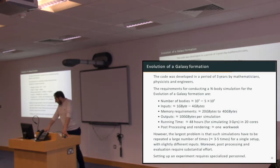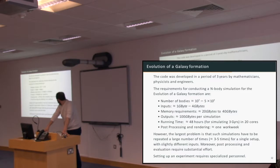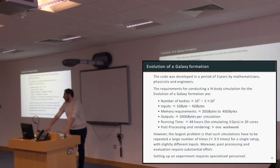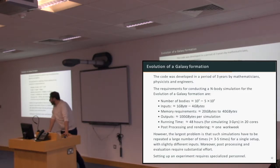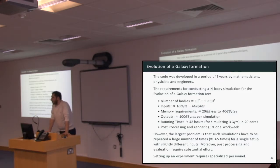What are the requirements for such a simulation and why we believe clouds might accelerate the pace of research? In this simulation, the number of particles ranges between 10^7 and 5×10^7. The inputs are about 1 to 4 gigabytes, memory requirements are 20 to 40 gigabytes, outputs are 100 gigabytes per simulation, and the runtime is 48 hours for 20 cores. If we want to conduct larger simulations, it might take days to get results. Post-processing takes one workweek for a team, and the largest problem is that simulations have to be conducted three to five times each with slightly different parameters.